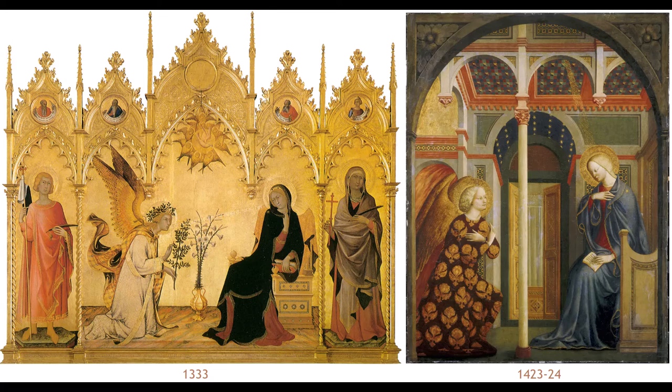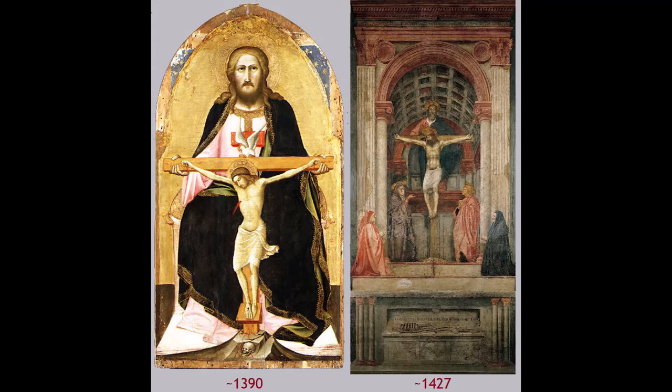In the Renaissance, the gold background of earlier paintings disappears, and in its place, the new manifestation of the Absolute becomes the vanishing point, especially in the Florentine center of the avant-garde.